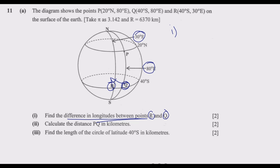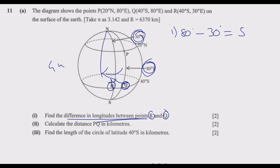If both points are in the east, you subtract. If one is in the east and one is in the west, you add the two — that's the principle. In this case, the one closer to the Greenwich Meridian is 30 degrees, and the farther one is 80 degrees. So 80 degrees minus 30 degrees gives us 50 degrees. This is the difference in longitudes between point R and Q.